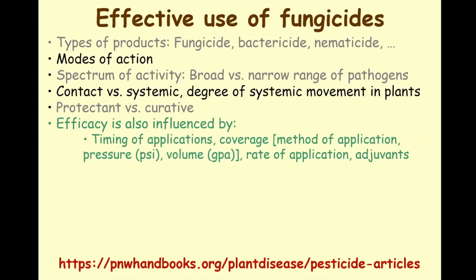The rate of application is really important. When you look at the label it'll say you can apply a product at rates from, say, 0.2 pounds per acre to 0.5 pounds per acre. The difficulty is that lower rates tend to result in lower efficacy. I almost never recommend to growers to use anything but the maximum labeled rate, and the reason is fungicide resistance.